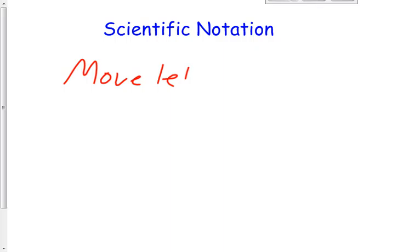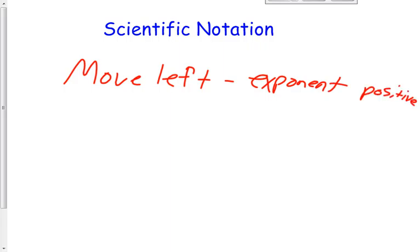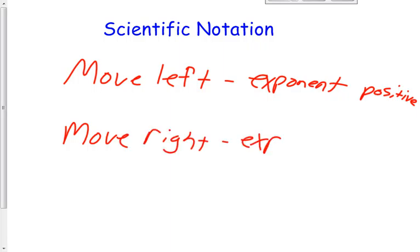One thing I want you to write down in your notes right now is the process for moving the decimal back and forth. When you move the decimal to the left, your exponent is going to be positive. And the exact opposite — if you move to the right, the exponent will be negative.